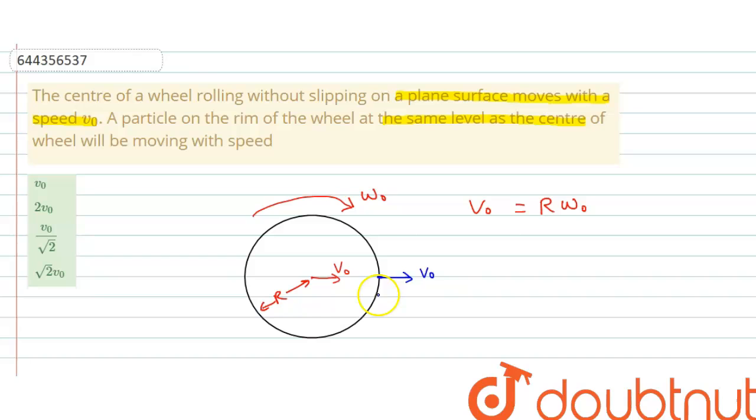Now, another is due to rotational motion, which is r into omega0 in tangential direction. So, in this direction, r into omega0.